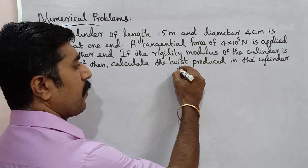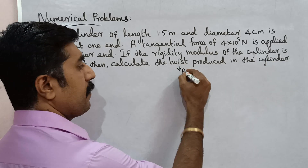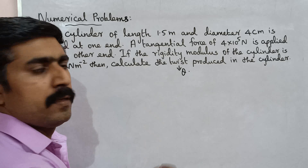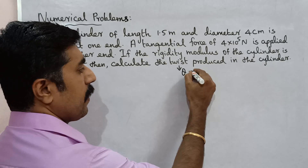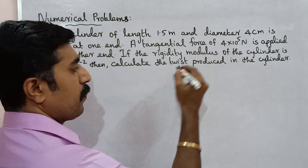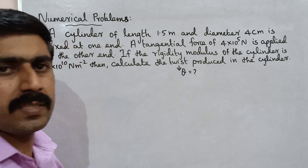Twist — that is denoted by letter theta. So theta is equal to some formula. Simple.